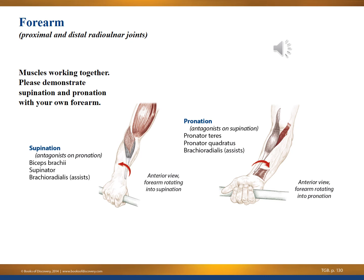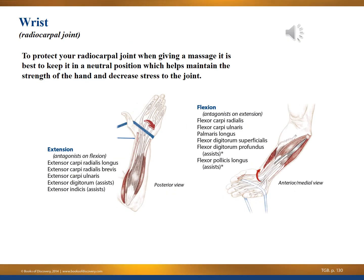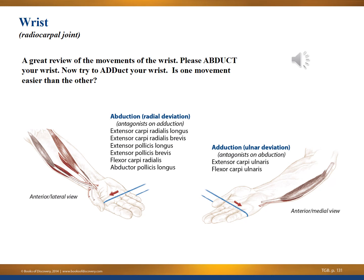At the wrist — the radiocarpal joint — movements include extension and flexion. To protect your radiocarpal joint when giving a massage, it's best to keep it in a neutral position, which helps maintain the strength of the hand and decrease stress to the joints. Movements of the wrist also include abduction and adduction — abduct by moving toward your thumb, adduct by moving toward the pinky. One direction is typically easier than the other.